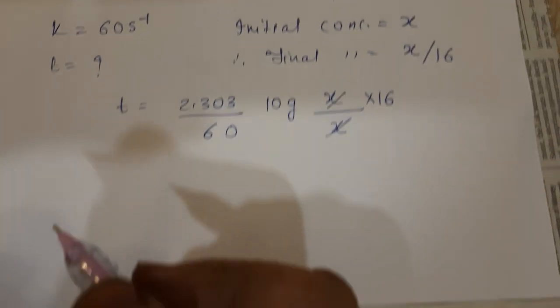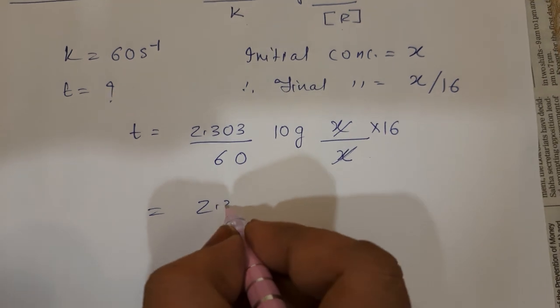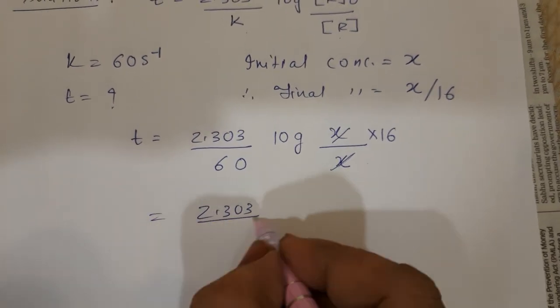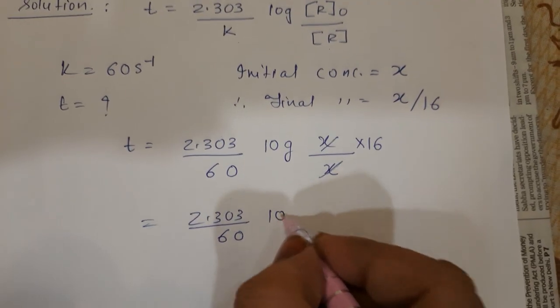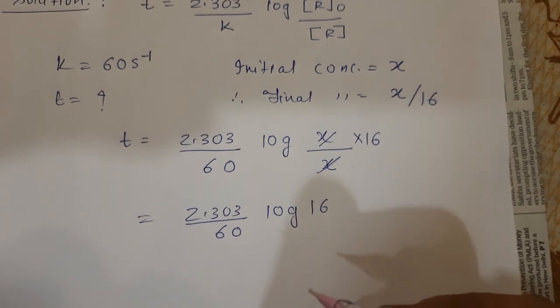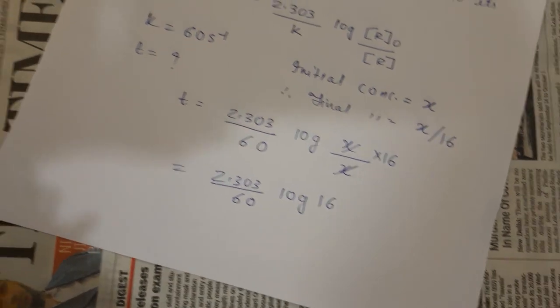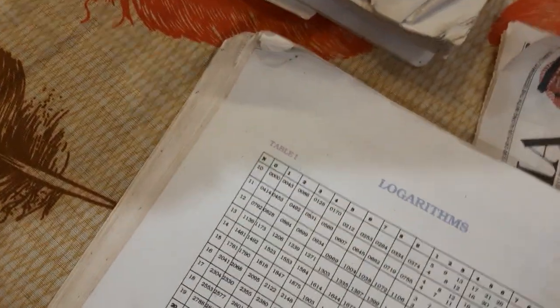So it's 2.303 upon 60 log 16. Looking in the log table for 16, the value is 2041. I don't think it's visible to you, but it's 2041.